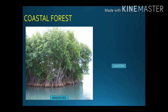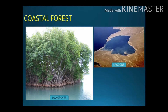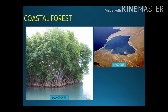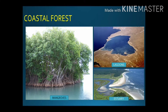A lagoon is a stretch of salt water separated by a coral reef or other barriers. An estuary is a tidal mouth of a large river where river water meets sea water. We can find aquatic plants, fishes, and birds in estuaries.